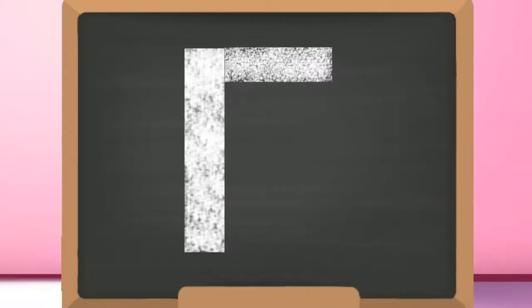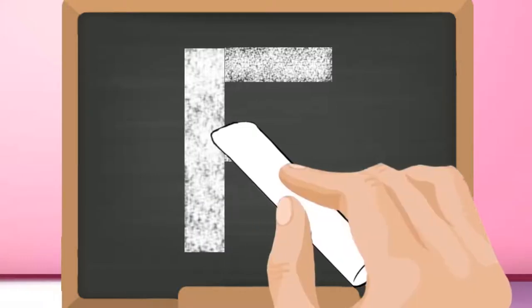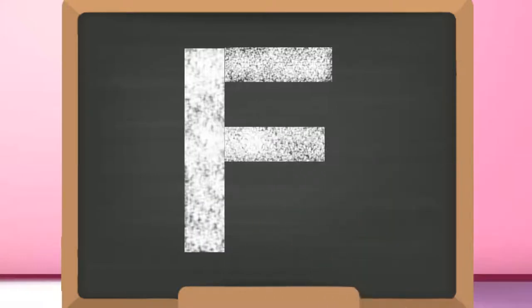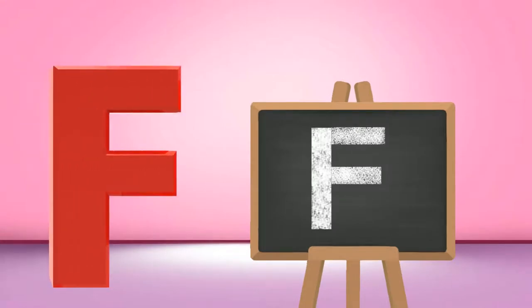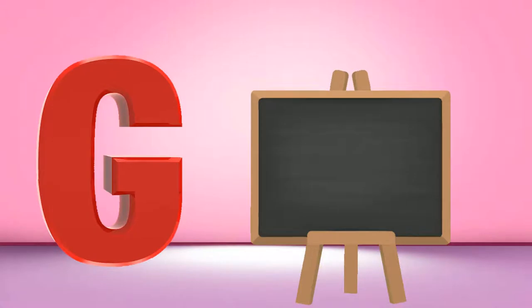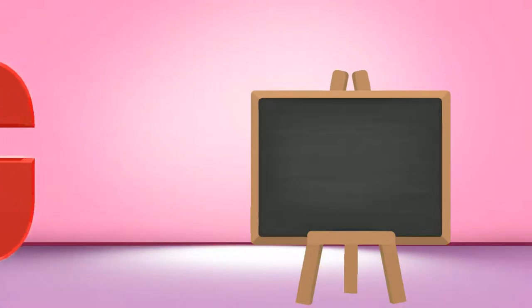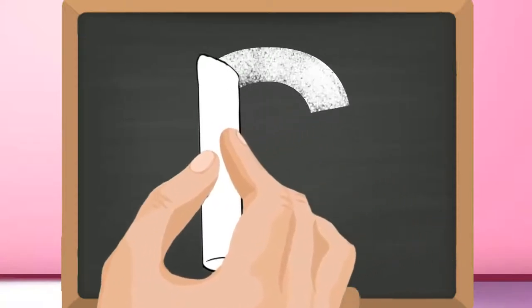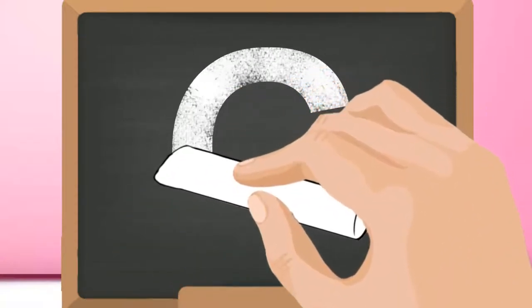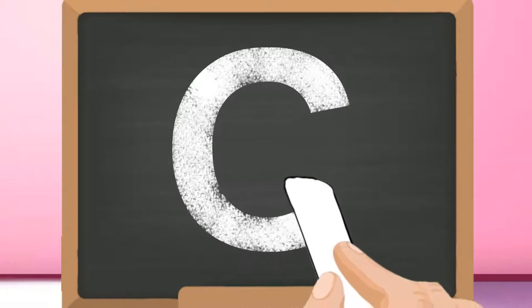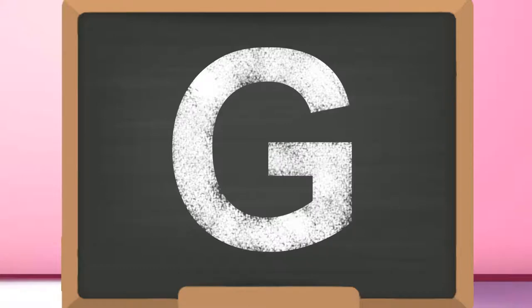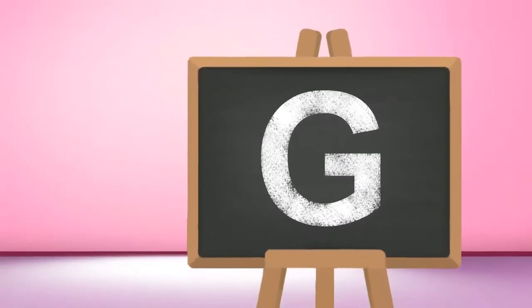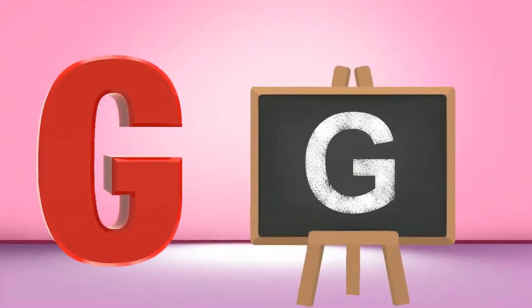G, capital G. Start below the top and draw a curve touching the bottom, and carry it till the middle. Then draw a standing line from the middle. Capital G.